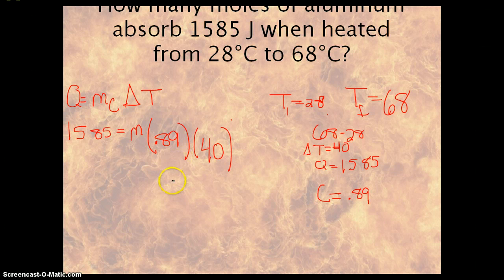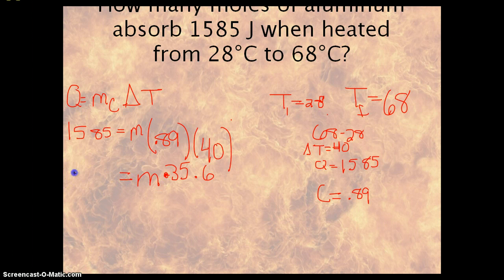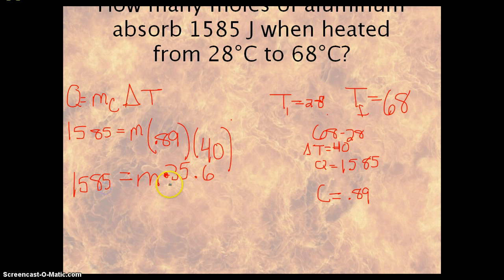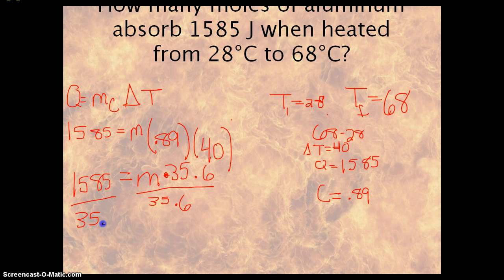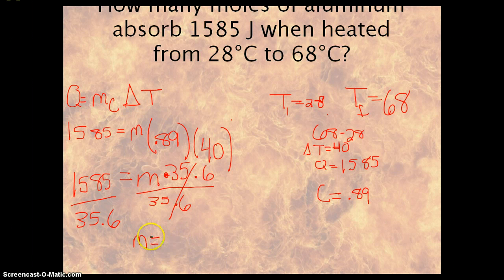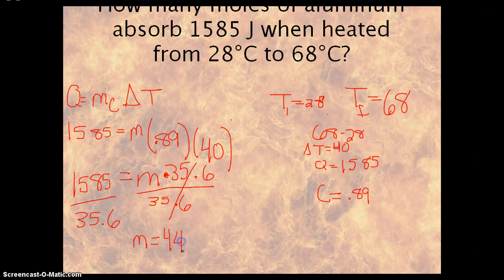Now it becomes a math problem. You multiply these two numbers and get 35.6 times mass. To get mass by itself, divide by 35.6 on both sides. So 1,585 divided by 35.6 gives us 44.52 grams. But the question asks us for moles.